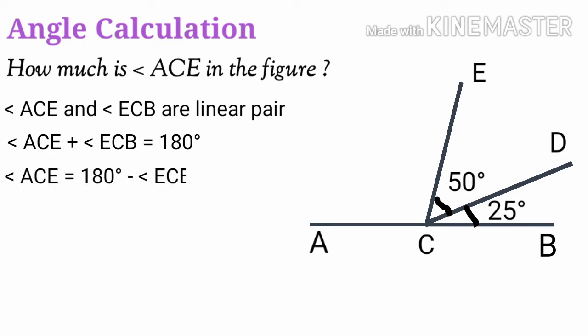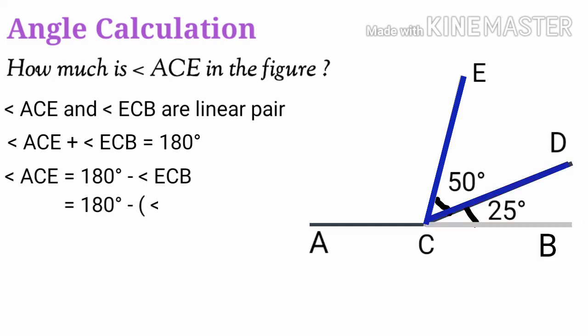Therefore angle ACE is equal to 180 degrees minus angle ECB. We know that angle ECB is equal to angle ECD plus angle DCB. Therefore angle ACE is equal to 180 degrees minus the sum of angle ECD plus angle DCB.